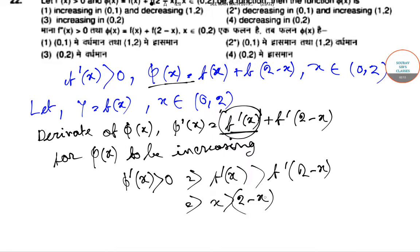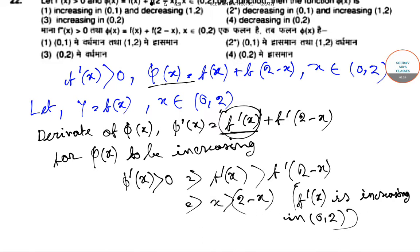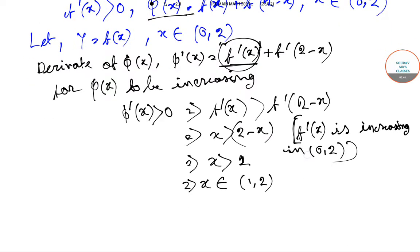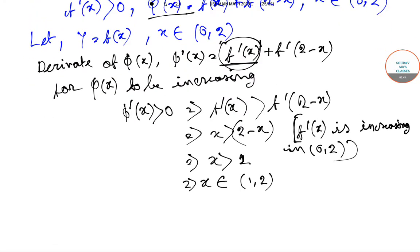This is equivalent to x > 2 - x, since f'(x) is increasing on (0, 2). So we get x > 1, which means x belongs to (1, 2).